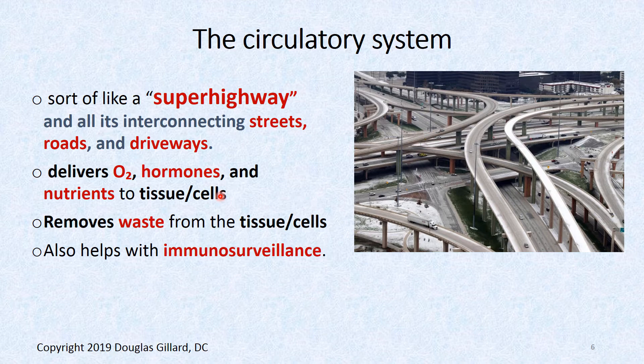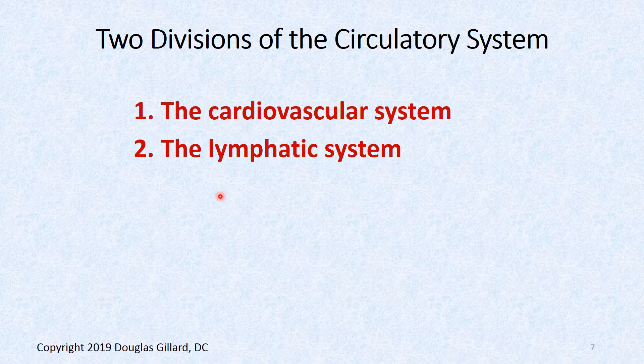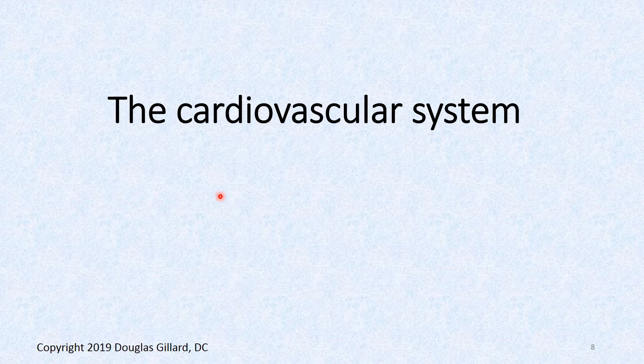The circulatory system also helps with immunosurveillance. If you get a bacterial or viral infection in your blood, the circulatory system will tell the bone marrow and spleen to start cranking up new white blood cells to fight that infection. There are two main divisions: the cardiovascular system and the lymphatic system.